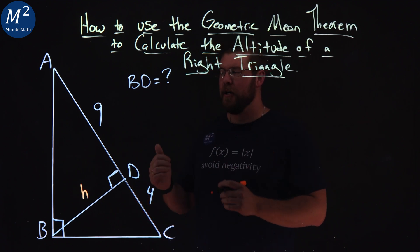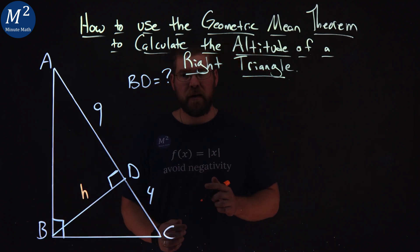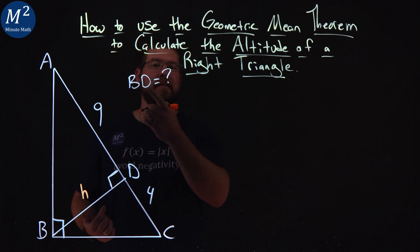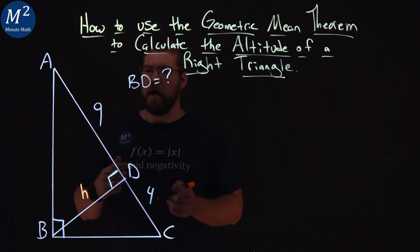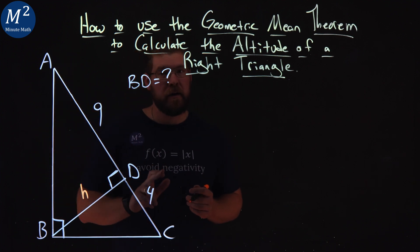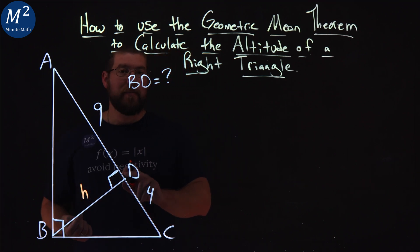So look at our triangle right here. We have triangle ABC. We have an altitude drawn for us, hence the right angle right here. Our altitude here is BD that we need to find. We're only given lengths of AD and DC being 9 and 4. That is separate from the altitude.